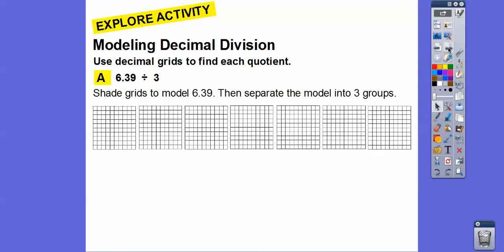So 6.39 divided by 3. Here are seven wholes right here. Remember, these are our hundredths grids, and the reason why they're the hundredths grids is because we're dividing by 0.39 — two decimal places. So this is 39 hundredths right there. So let's shade six of these for the six, and then we'll shade 0.39 here — one column, two column, three column. And then the 0.09 right here is going to be on this fourth column; we'll shade nine of them. So here's 6.39.